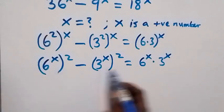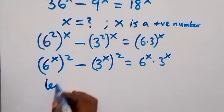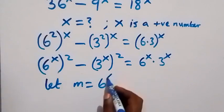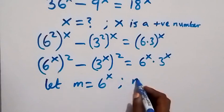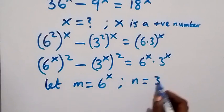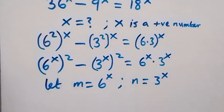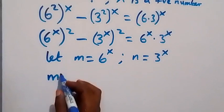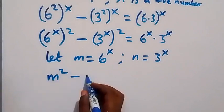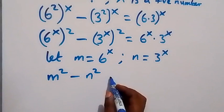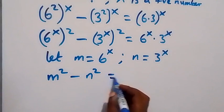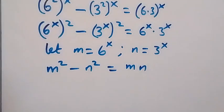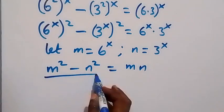We have 6 raised to power x and 3 raised to power x as common factors. Let m equal 6 raised to power x and n equal 3 raised to power x. We can write this equation in terms of m and n as m squared minus n squared equals m times n.